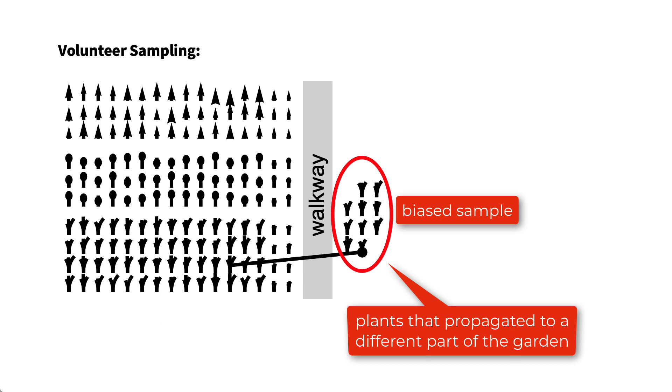Volunteer sampling can result in bias because plants that propagate may not be typical of all of the plants in the garden, just as individuals who choose to respond to a survey may not be representative of the entire population.